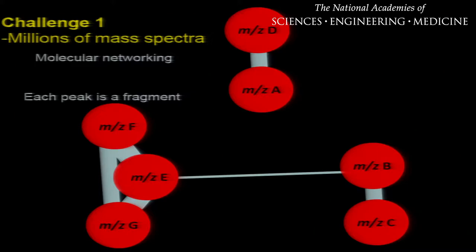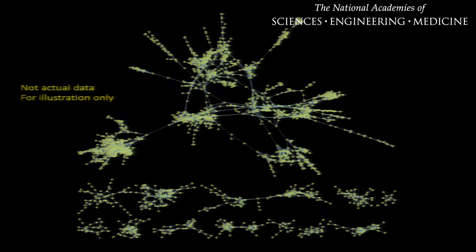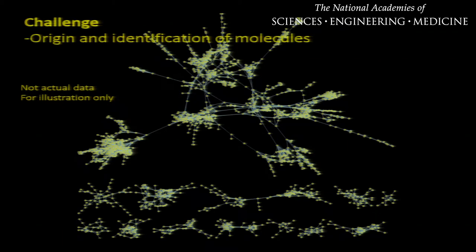Shown here are two molecular families, but in reality a data set has many such molecular families, such as lipids, peptides, amino acids, antibiotics, and more. The challenge that still remains is: how do we begin to explore the origin or source of these molecules, and how do we identify what these molecules are?